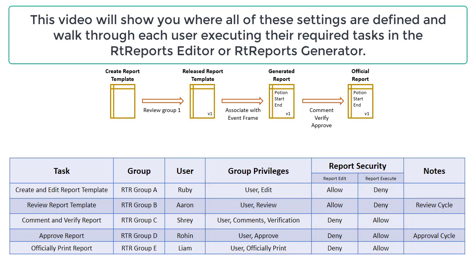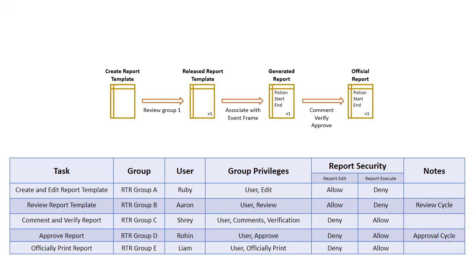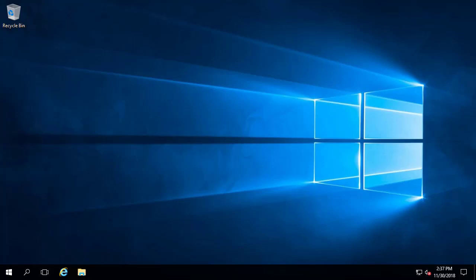In addition to these permissions, the review cycles and approval cycles are set up in the RT reports editor. The review cycle defines who needs to approve the report before it is released and can be used to print reports in the RT reports generator. The approval cycle defines who needs to approve a report for a specific batch or event frame before it can be officially printed.